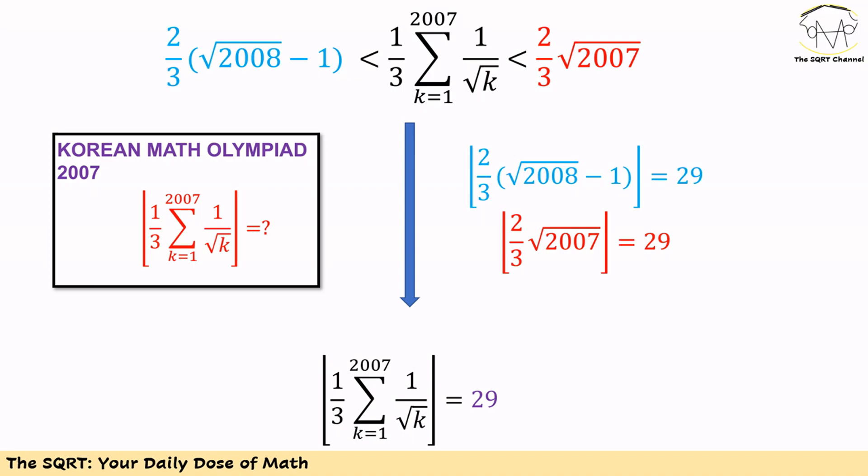If you calculate the lower bound and upper bound and then take the integer part of them, you will see both are 29. So it is easy to see that the integer part of the expression we have is going to be 29, and that's our answer.